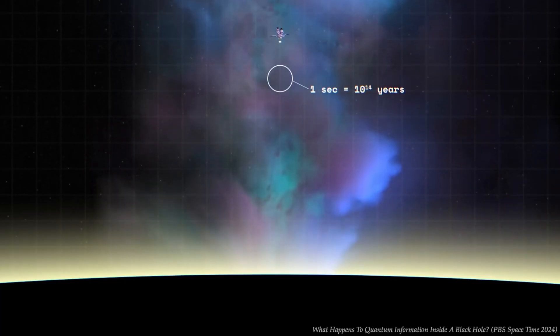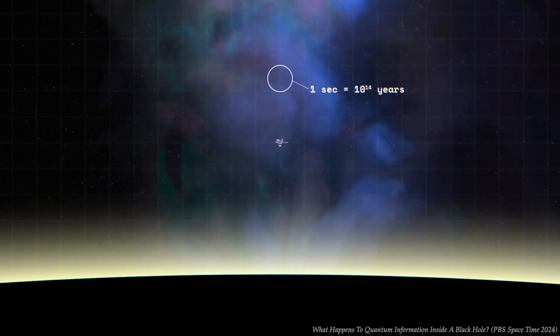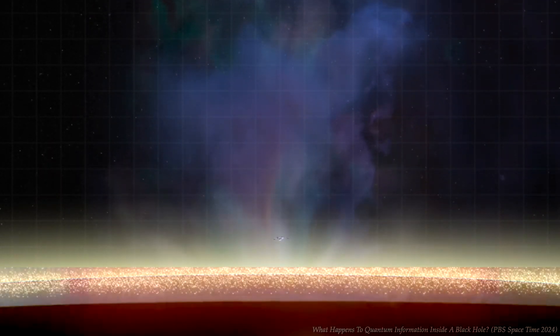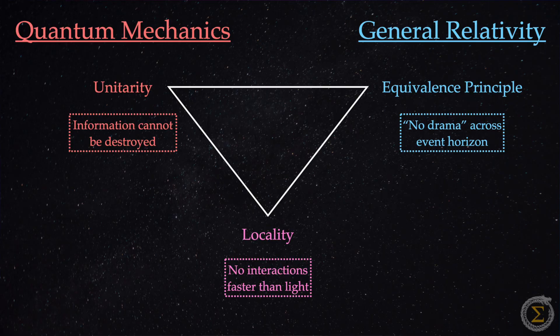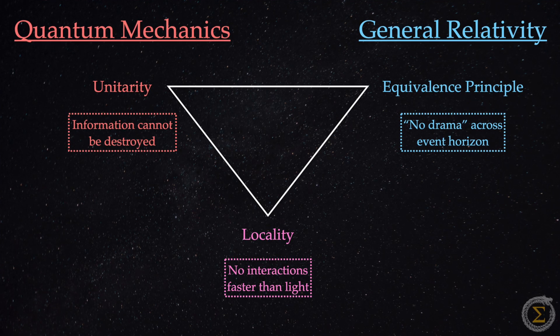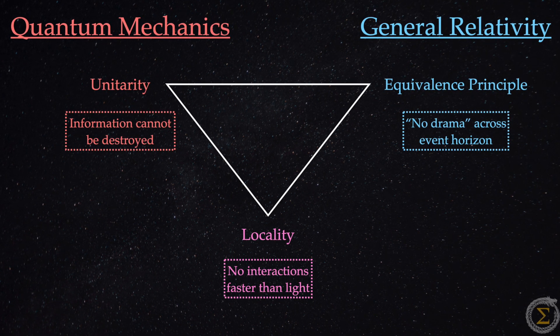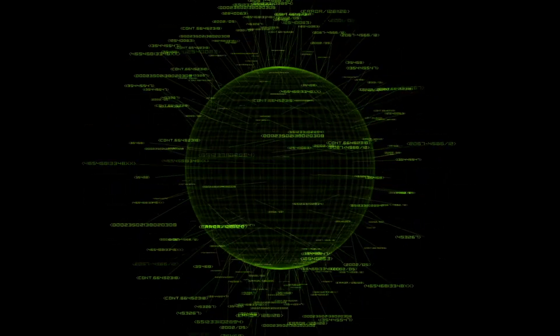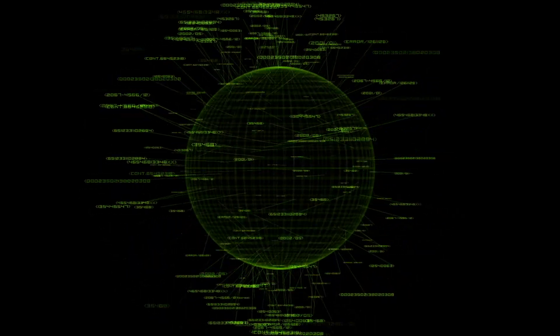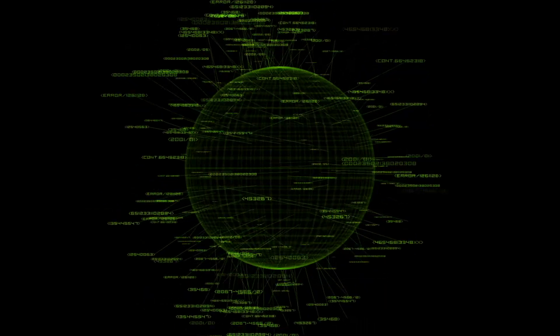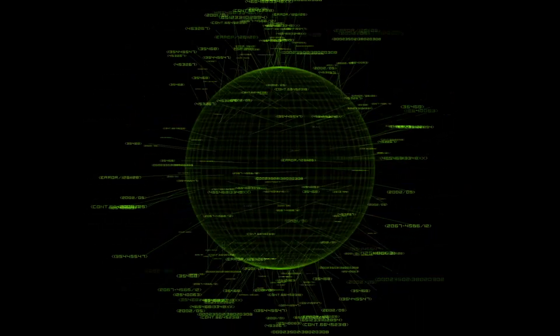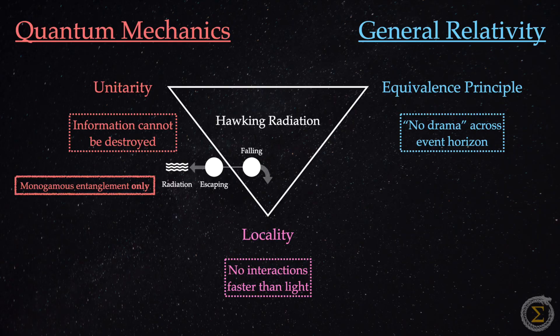Let's review. Black hole firewalls propose a terrifying possibility: a wall of searing energy that incinerates anything crossing the event horizon. We examined the conflict between quantum mechanics and general relativity, focusing on three irreconcilable principles. The information paradox arises from Stephen Hawking's discovery that black holes emit radiation that seem to carry no information, creating a conflict between unitarity, the need to preserve information, and the equivalence principle, no drama at the event horizon.